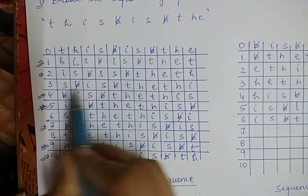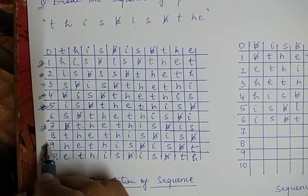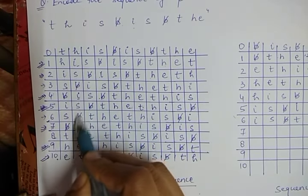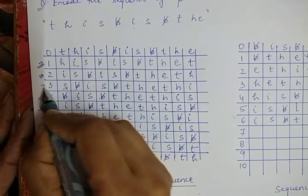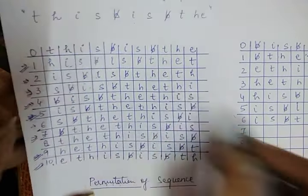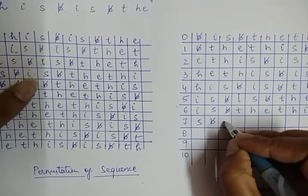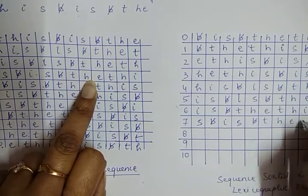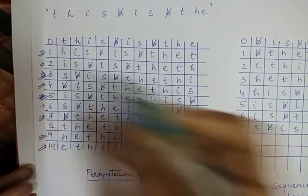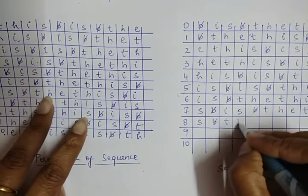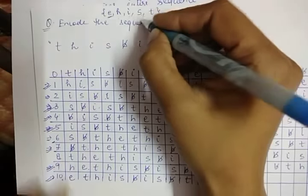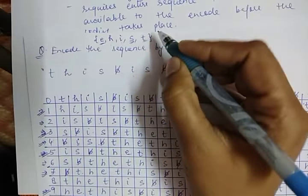Now 's' comes at positions three and six with the same priority. The second symbol is 'b space' for both — same priority. The third symbol: position three has 'i' and position six has 't', so 'i' comes first. Position three goes to place seven: 's b space i s b space t h e t h i'. Position six goes to place eight: 's b space t h e t h i s b space i'.